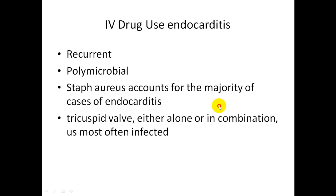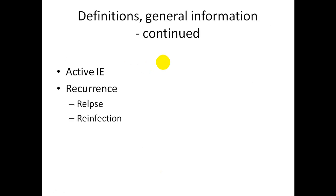In intravenous drug abuse, endocarditis is usually recurrent and polymicrobial. Staphylococcus aureus accounts for the majority of cases. The tricuspid valve, either alone or in combination, is most often infected on the right side of the heart. By activity, infective endocarditis can be classified as active — either acute or subacute — or recurrence, which is relapse from partial treatment or reinfection by the same or different organism.